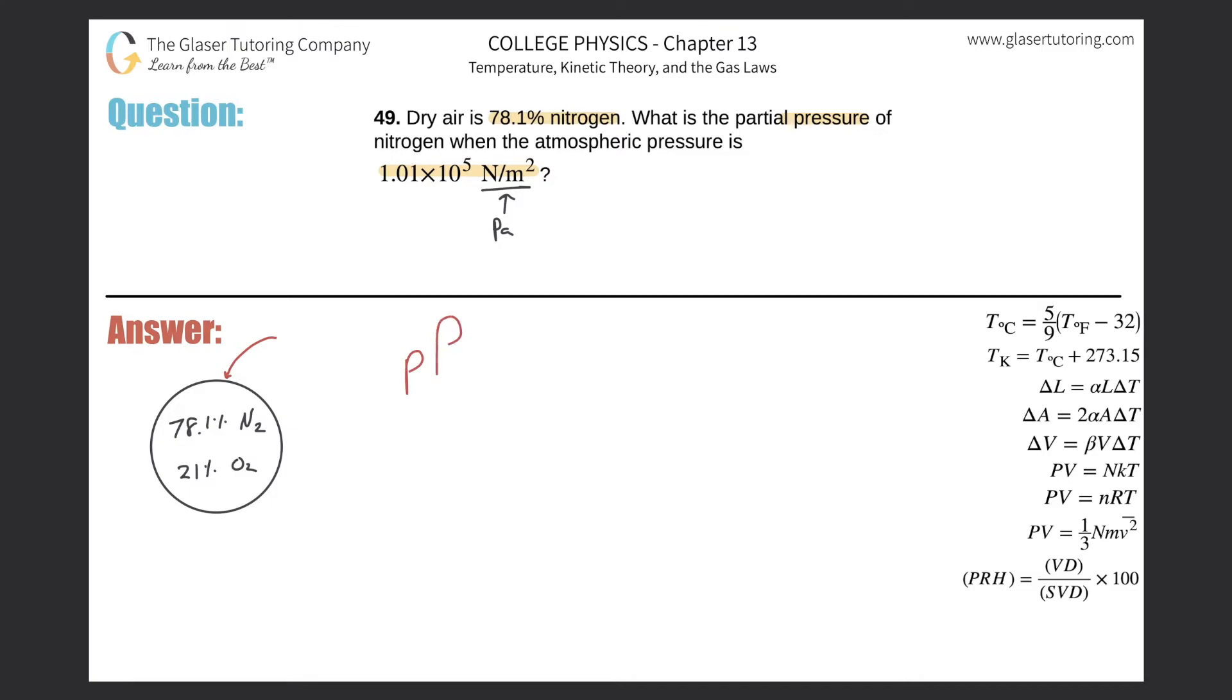In other words, you might remember this formula that the partial pressure of, let's say N2 or a certain gas, will be equal to the fraction, the fraction of that gas, so of N2, in the mixture, multiplied then by the total overall pressure.